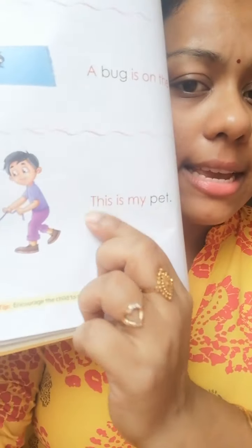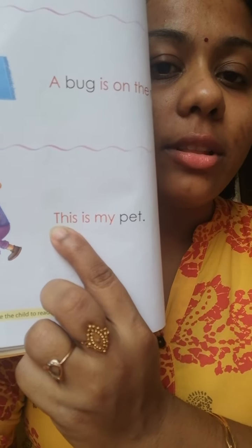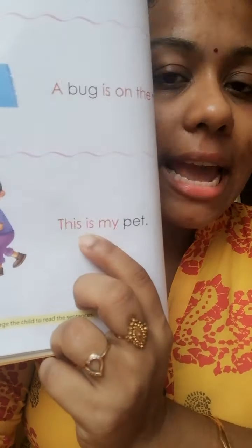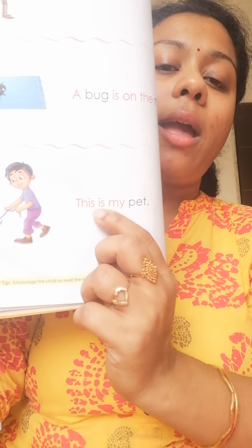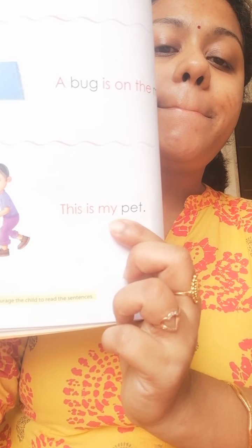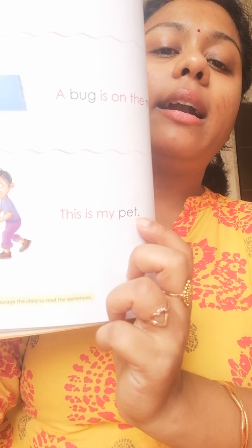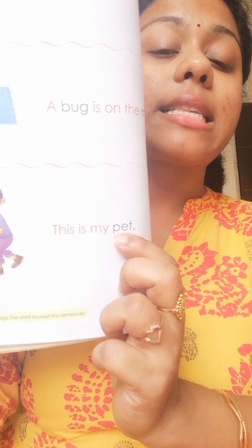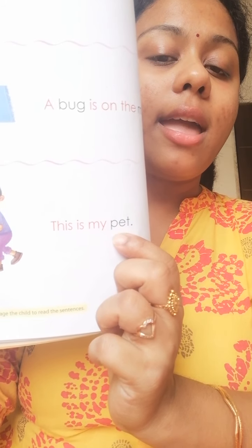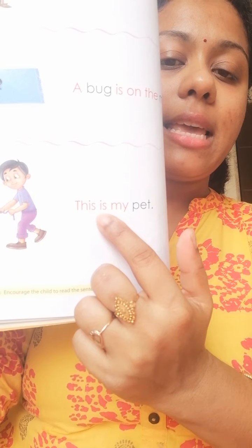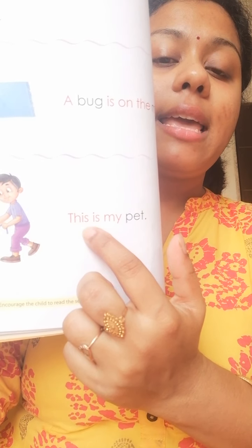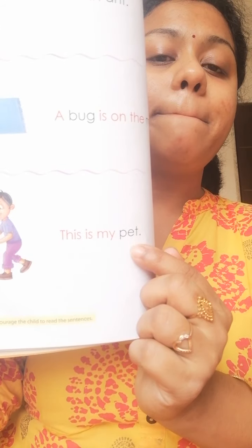Next sentence is: This is my pet. T-H-I-S, this. I-S, is. M-Y, my. P-E-T, pit. This is my pet.